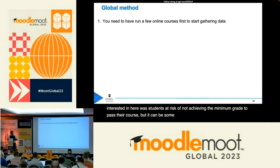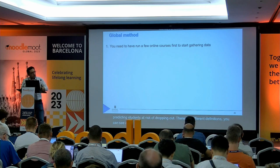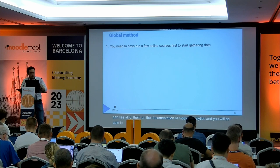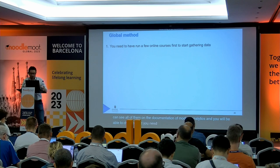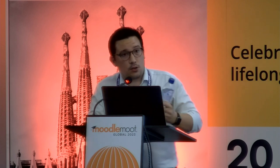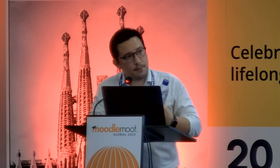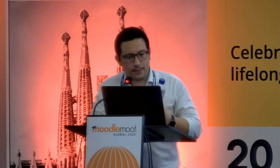There can be other targets, like predicting students at risk of dropping out. There are different definitions — you can see all of them in the Moodle Analytics documentation and choose what you need given your problem. Once you have selected a specific target, you will need to select the predictors, which in machine learning we call features — variables you think are correlated to the target you aim at predicting. The algorithm will use them to calibrate and make predictions as accurately as possible.